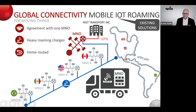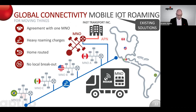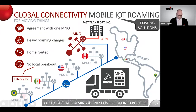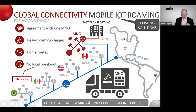Note that all this traffic is home routed, so there is no local breakout of the traffic anywhere. And that adds latency, etc. So the bottom line here is that you get quite costly global roaming, and probably you only have a few predefined policies that you can play with.